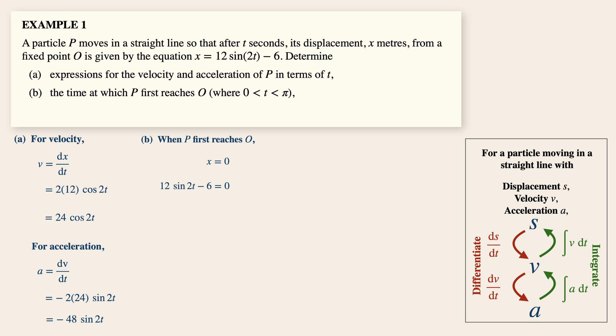Now there will be multiple answers when we solve this trigon equation. So since the question says first reaches O, simply take just the acute or the smallest angle that first satisfies this equation, which is pi over 6. Thus solving for t, the time is pi over 12 when P first reaches O.